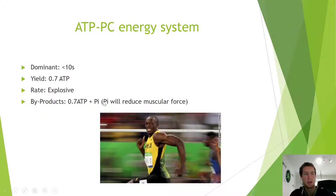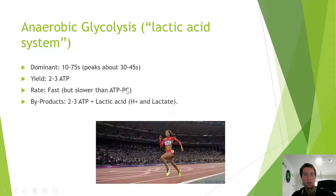The byproducts we get are ATP and inorganic phosphate (PI). When we get an accumulation of inorganic phosphate, it's going to reduce muscular force. I'll do another video in detail about how that happens, but all you need to know is that it will reduce your muscular force, which is why you slow down particularly on the back end of a 100 meter sprint.